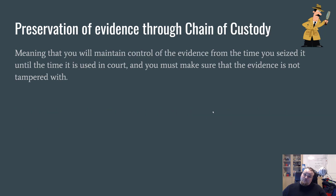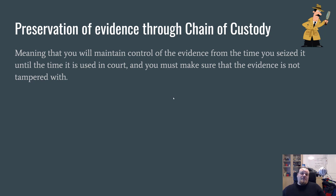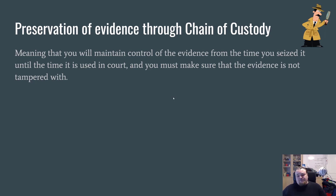Preservation of evidence through chain of custody means maintaining controlled evidence from the time you seize it until it is used in court. You must ensure the evidence is not tampered with. If you cannot prove it hasn't been tampered with, the easiest way to demonstrate that is to perform a checksum on whatever data you're analyzing.